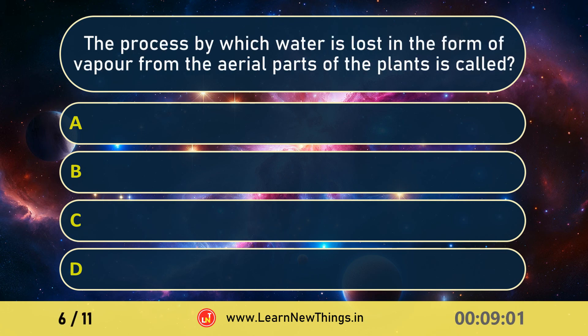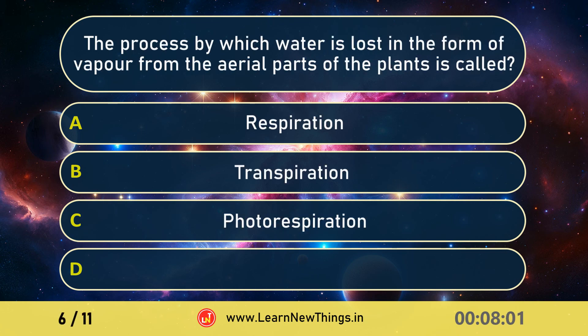The process by which water is lost in the form of vapour from the aerial parts of the plants is called? Transpiration.